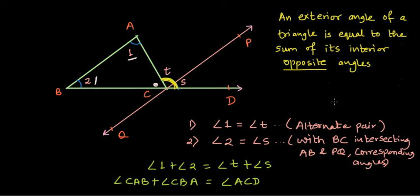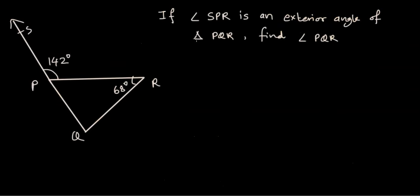Let's look at a problem based on this theorem. The problem here is that if angle SPR is an exterior angle of triangle PQR, find angle PQR.